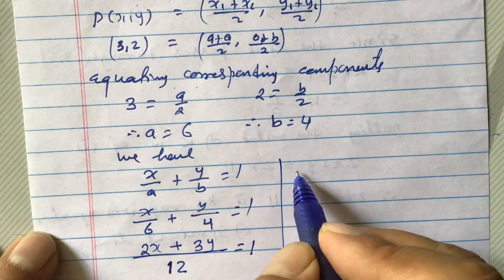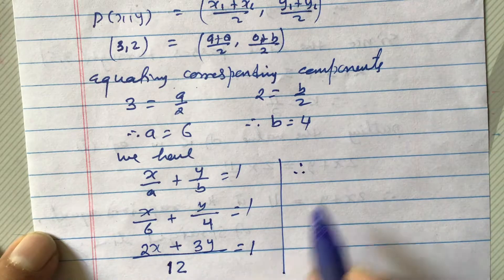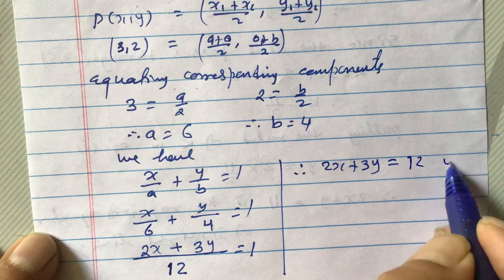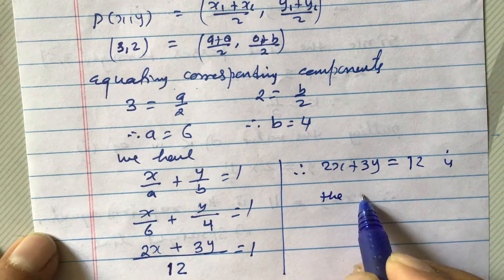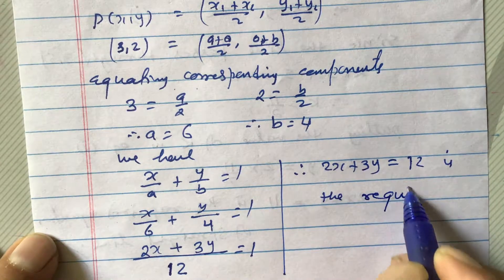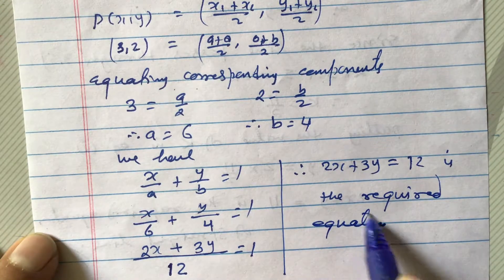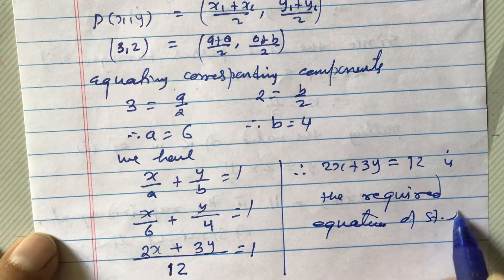So, we can now, therefore, we can cross multiply this one, 2x plus 3y equals to 12 is the required equation of straight line.